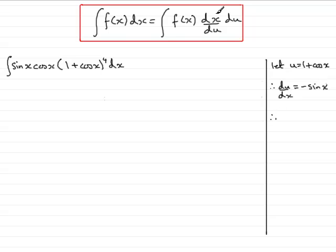We need dx/du, and we have du/dx here, so dx/du is always equal to 1 over du/dx, so that's going to be 1 over minus sine x, so in all that's going to be minus 1 over sine x.